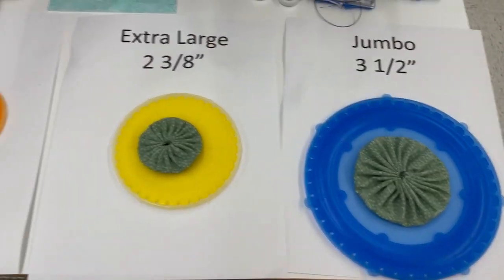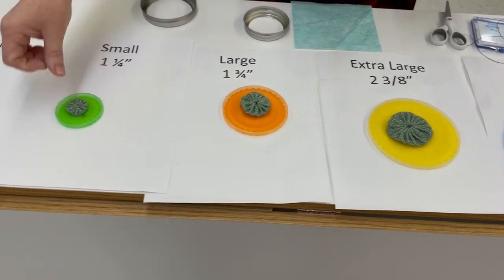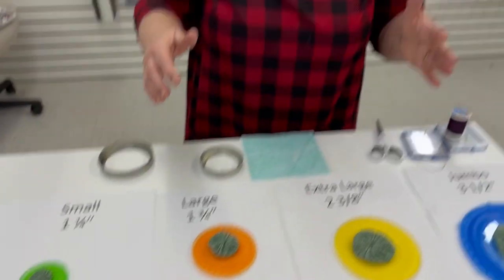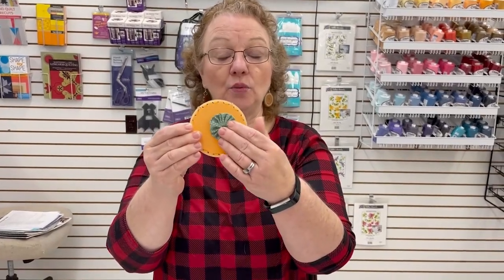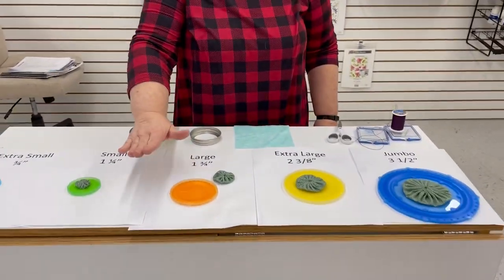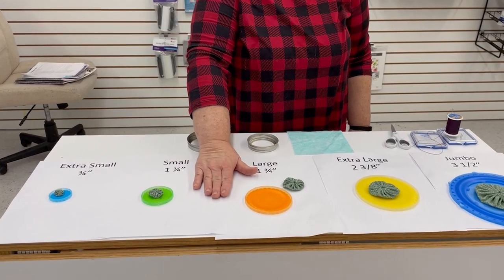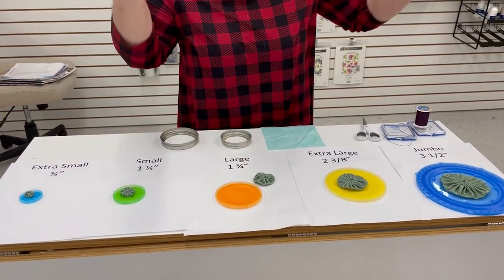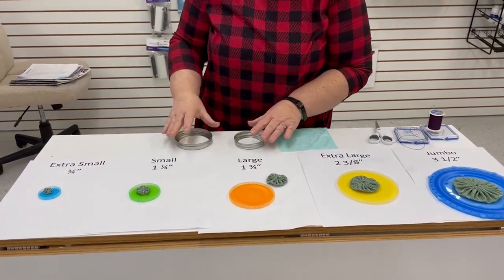Now, you notice the sizes of these are about half the size of the yo-yo maker. So when you're choosing your yo-yo maker, don't go by this size. You have to be aware that it's only going to be half the size. And you also notice there is no medium. It's not because I forgot. Clover just doesn't make a medium. They go from small to large.